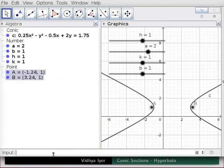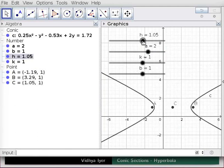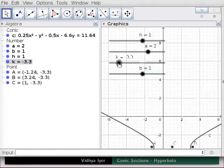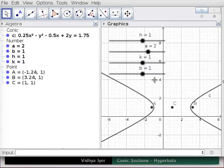In the input bar, type center C in parenthesis and press enter. Center point C appears in graphics view. Its coordinates appear in algebra view. Note that the center has the coordinates H, K. Drag sliders H and K from end to end. Note the effects on hyperbola C.